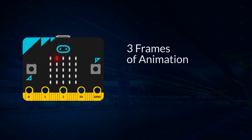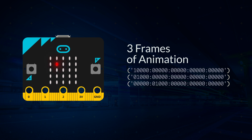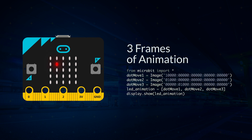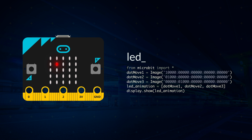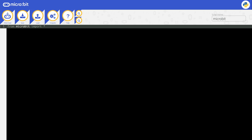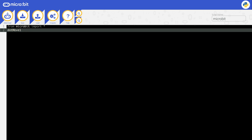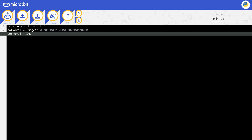Each frame needs the state of all its LEDs storing, and each frame needs to be stored in a variable. Remember to give it a sensible name. In this code, the first frame is stored in the variable dot_move_one, frame two is in dot_move_two, and frame three is in dot_move_three. You can manually display each frame one at a time using display.show for each variable on a new line.